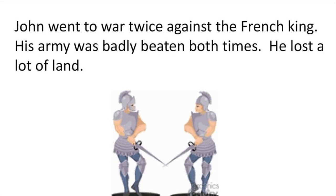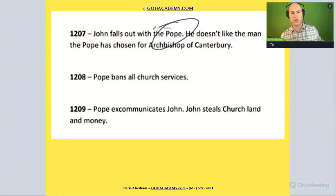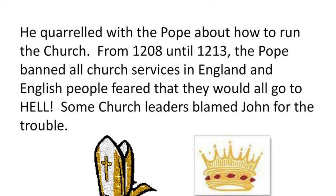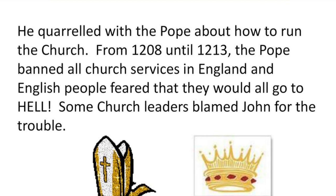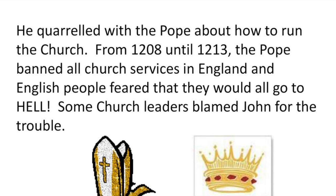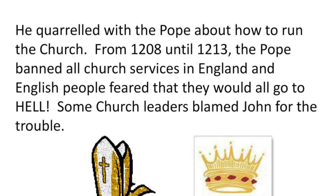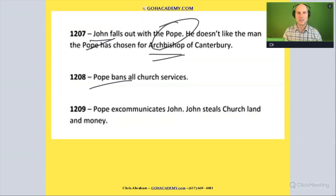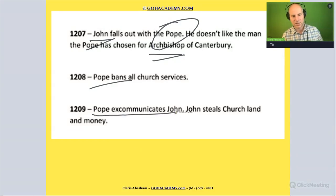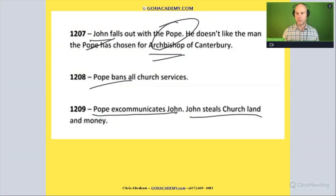He even had problems with the church. The pope wanted a specific archbishop, and King John didn't want that archbishop. There was a big feud, so the pope banned all church services in England — no more weddings, no more funerals, nothing. The pope excommunicated King John, and King John seized all the land from the church.